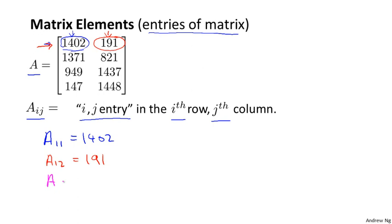Let's say A_32 is going to refer to the entry in the third row and the second column, right? So that's equal to 1437.